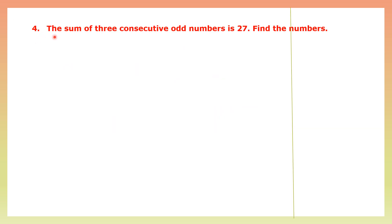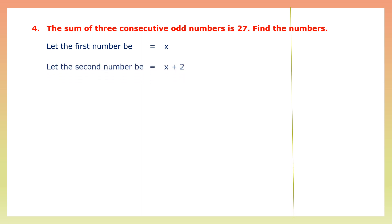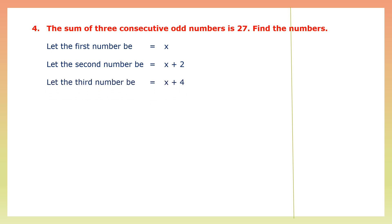Question 4: The sum of three consecutive odd numbers is 27. Find the numbers. This time we're talking about three numbers that come one after the other and are odd. The difference between two consecutive odd numbers is also 2. Let the first number be x.